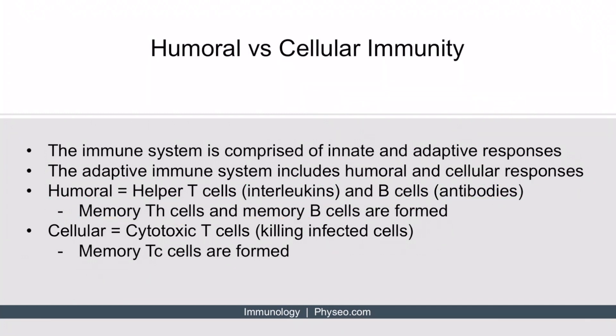Cellular immunity refers primarily to cytotoxic T cells, and these work by directly killing infected cells. Because cytotoxic T cells are involved, when cellular immunity is activated, memory cytotoxic T cells will be formed.